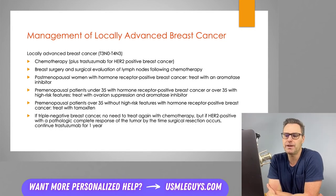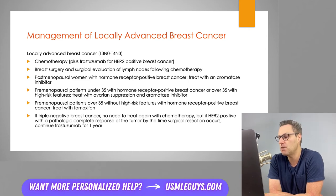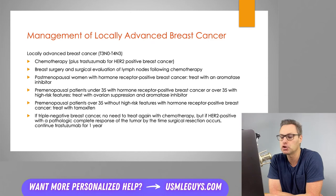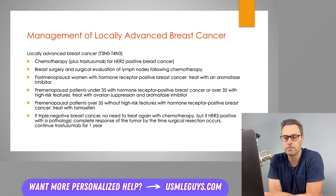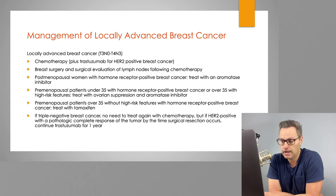Locally advanced breast cancer ranges from T3N0 to T4N3 — basically everything not considered early stage. For these patients, the first step is typically chemotherapy rather than breast surgery. Patients undergo chemotherapy regimens plus trastuzumab for HER2 positive breast cancer. Following chemo, patients have breast surgery and surgical evaluation of the lymph nodes. Following surgery, postmenopausal women with hormone receptor positive breast cancers are treated with an aromatase inhibitor. Premenopausal patients under 35 with hormone receptor positive cancer, or over 35 with high-risk features, are treated with ovarian suppression and an aromatase inhibitor. Premenopausal patients over 35 without high-risk features can be treated with tamoxifen. If triple negative breast cancer is found, there is no need to treat again with chemo. If HER2 positive is found with a pathologic complete response by the time of surgical resection, the recommendation is to continue treating with trastuzumab for one more year.